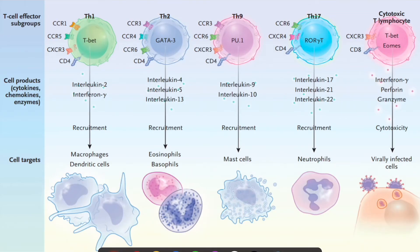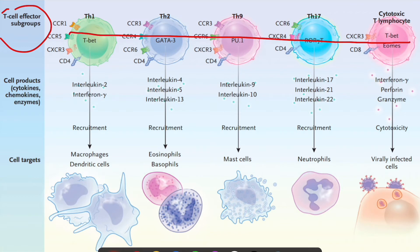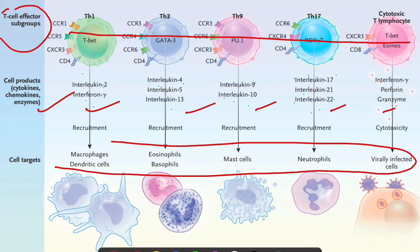In cytokine storm, the most important cell line affected is the T-cell line. These cells become prolongedly activated, resulting in release of cytokines which recruit additional cells and amplify the inflammatory response, ultimately resulting in organ damage.